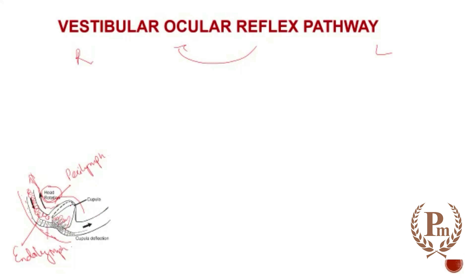When we are rotating our head towards the right side, the whole apparatus also moves towards the right side. But this fluid is at a state of inertia of rest — it takes time to follow the path of rotation. So instead of rotation in the right direction, there will be movement of the fluid towards the left side — a leftward movement of the endolymph.